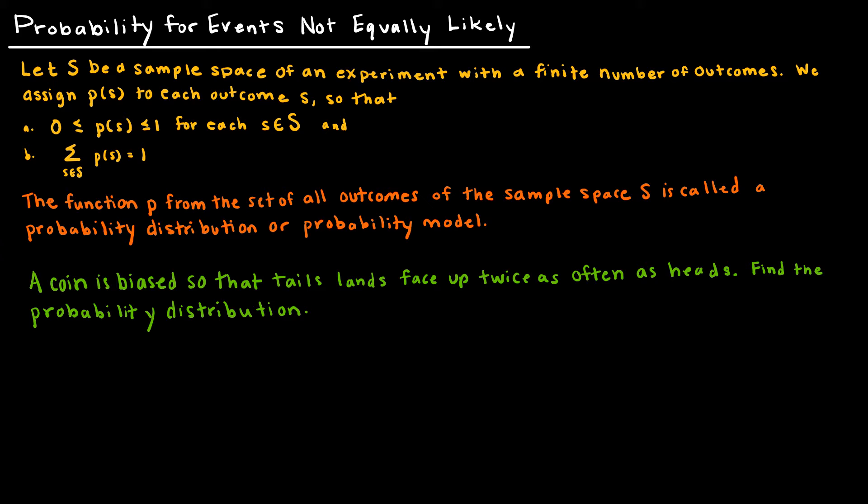With a finite number of outcomes, we assign P(s) to each outcome s so that the probability is between 0 and 1 for each outcome, and the sum of all the probabilities is 1. Here, we're just specifying that the events are not equally likely. When we have situations like this, you will be asked to give a probability distribution or probability model, which is just the set of all the outcomes along with their probabilities.